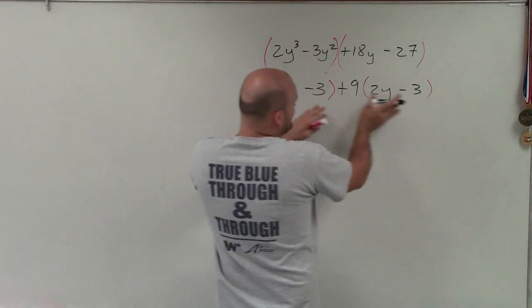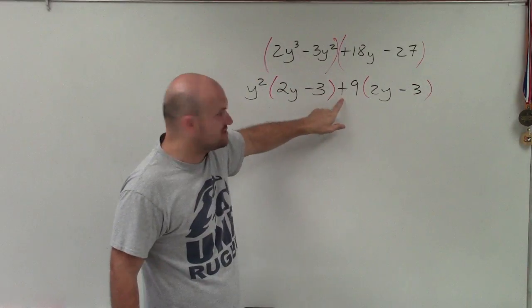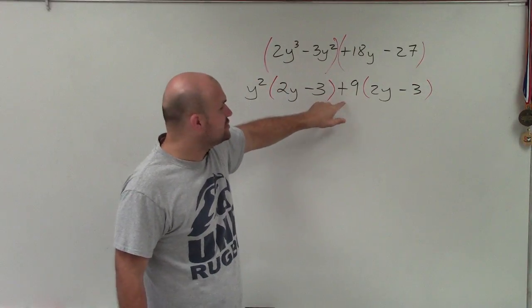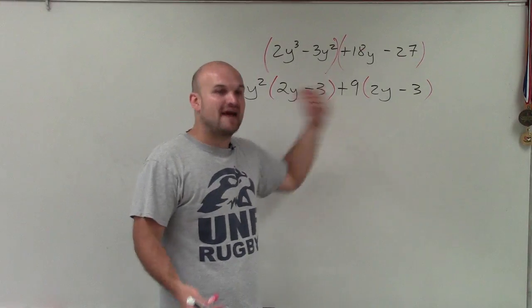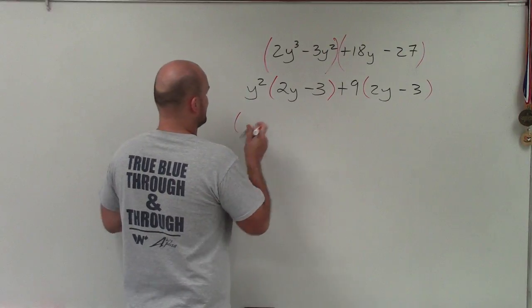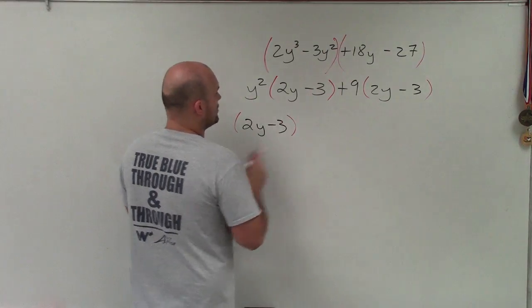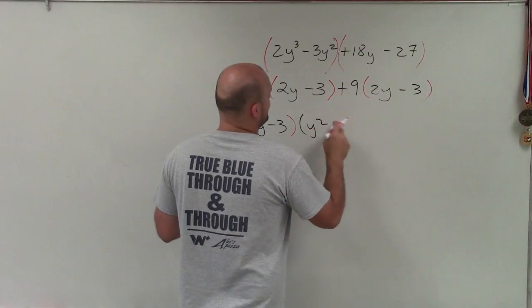Since this is exactly the same, this is common between these two expressions that are separated by the addition sign. Therefore, since it's common to both of them, I can factor it out. So I factor this out, which would leave me with 2y minus 3, and left over I have y squared plus 9.